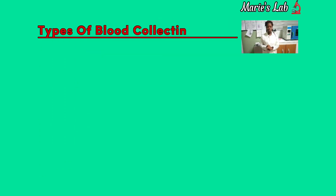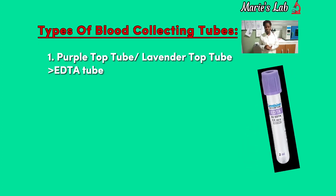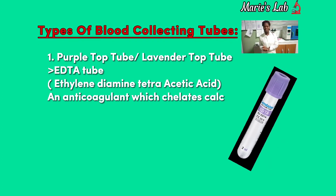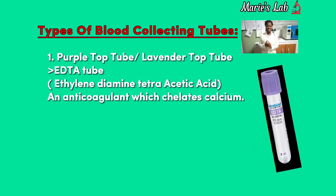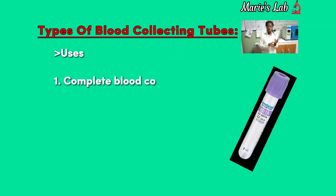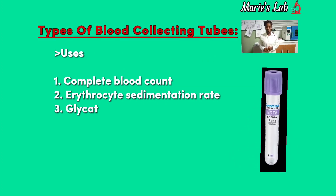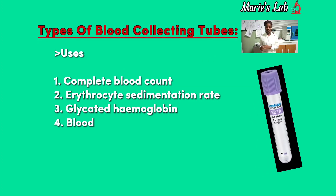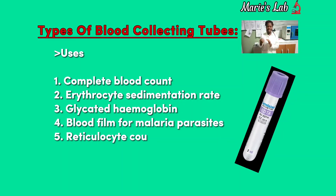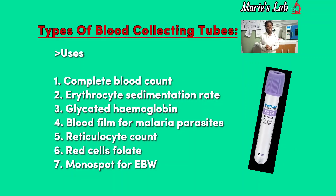Types of blood collection tips. Number 1: Purple top tube, that is the EDTA tube, also known as EDTA which means ethylene-diamine tetra-acetic acid. The uses of this tube: it is used for complete blood count, erythrocyte sedimentation rate, glycated hemoglobin test, blood film for malaria parasites, reticulocyte count, red cell fluid, and ham spot test for EDTA.